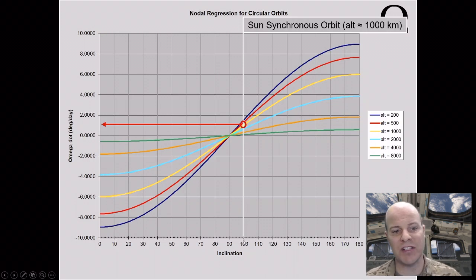So what inclination do we need to have? Turns out sun-synchronous orbits are approximately between 95 and 105 degrees. So slightly retrograde orbits are going to give us that sun-synchronous kind of behavior.